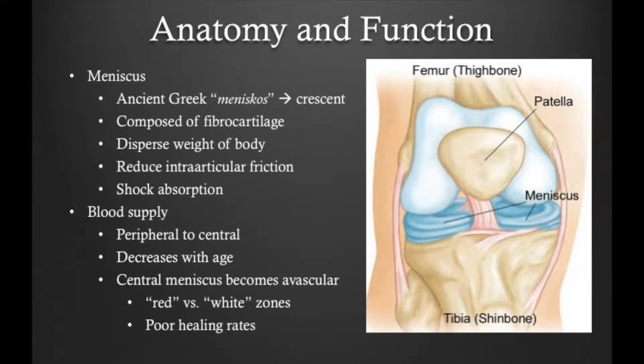The meniscus comes from the ancient Greek word meniscus, which means crescent. As described, the meniscus is crescent-shaped and composed of fibrocartilage. It functions to disperse the weight of the body, reduce intra-articular friction, and provide shock absorption. As a result, it plays a crucial role in the function of the knee.